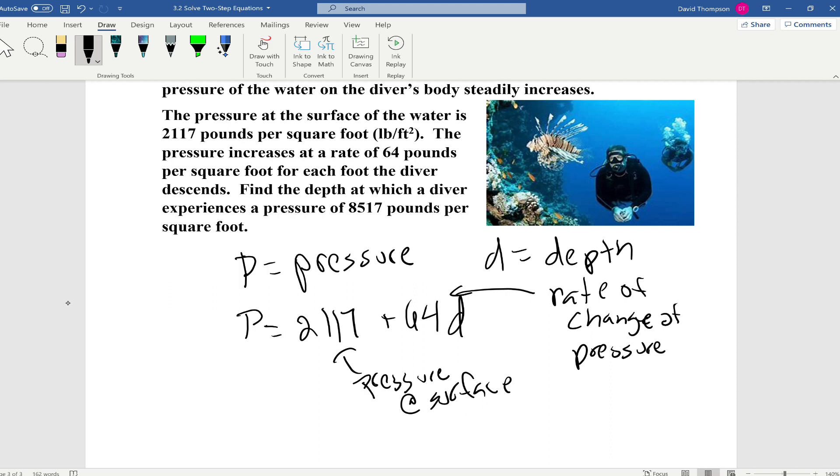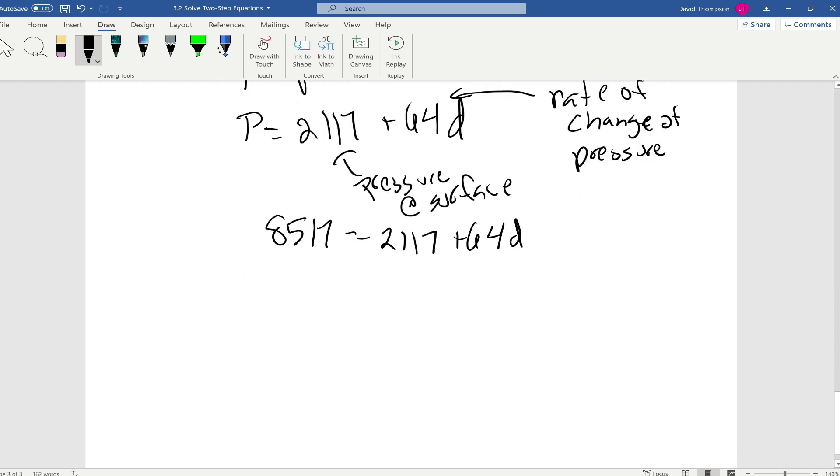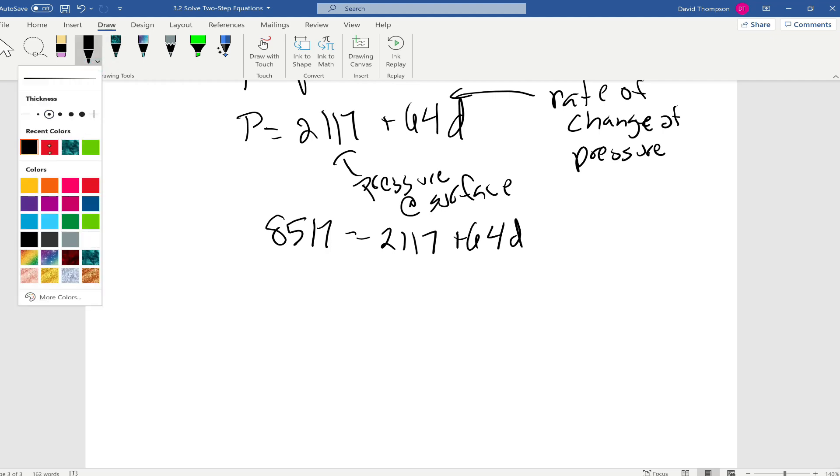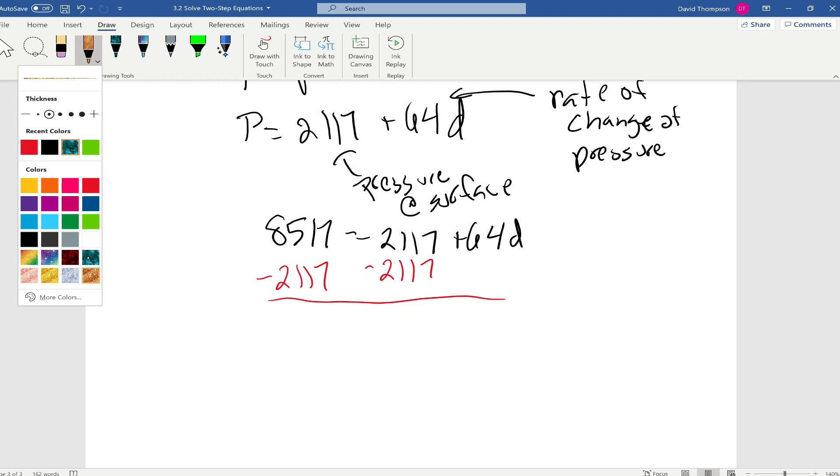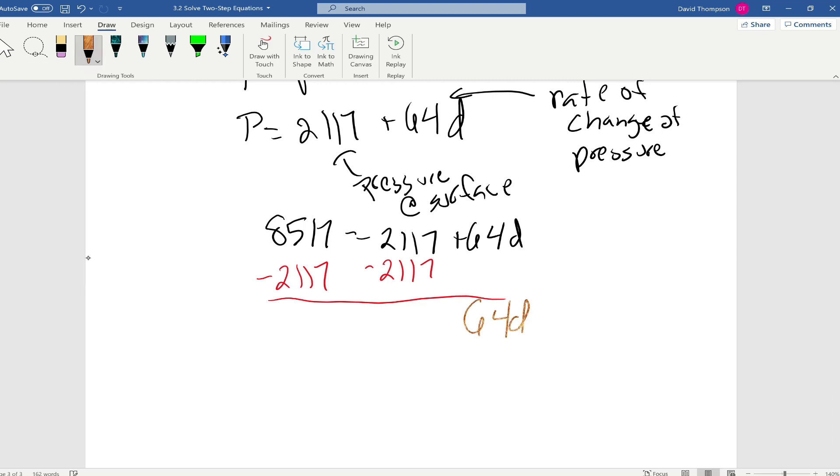So what we're going to set equal, we're going to set p equal to 8,517. 8,517 equals 2,117 plus 64d. So first thing we're going to do is we're going to subtract 2,117 from both sides. So that's 64d equals 6,400.